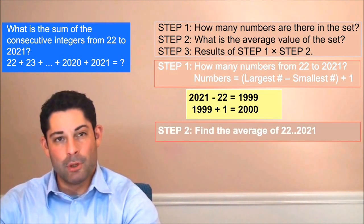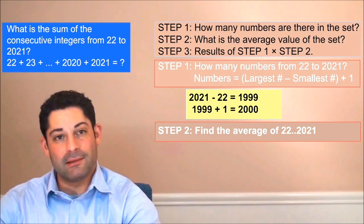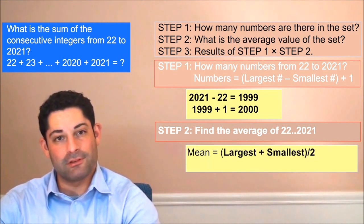In our second step we want to determine the mean average of our set. We do this by taking the sum of the largest and smallest members of the set and then dividing the sum by 2.